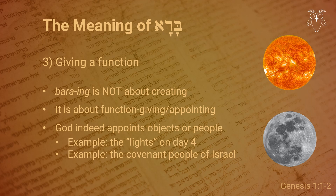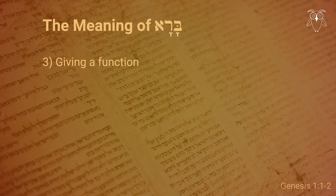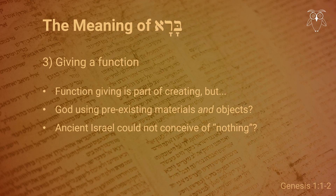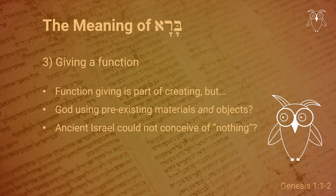However, despite the correct observation that function giving is certainly part of the divine act of creating and most if not all human acts of making, I am quite hesitant to limit it to this only, as some scholars want to do. This is in part because it doesn't just assume that God used a pre-existing material, but that God used pre-existing building blocks and entire objects. Much of this is inspired by the assumption that the ancient Israelites could not have had a concept for creating out of nothing, because they had no thought category for nothing. This last assumption I personally find somewhat objectionable.